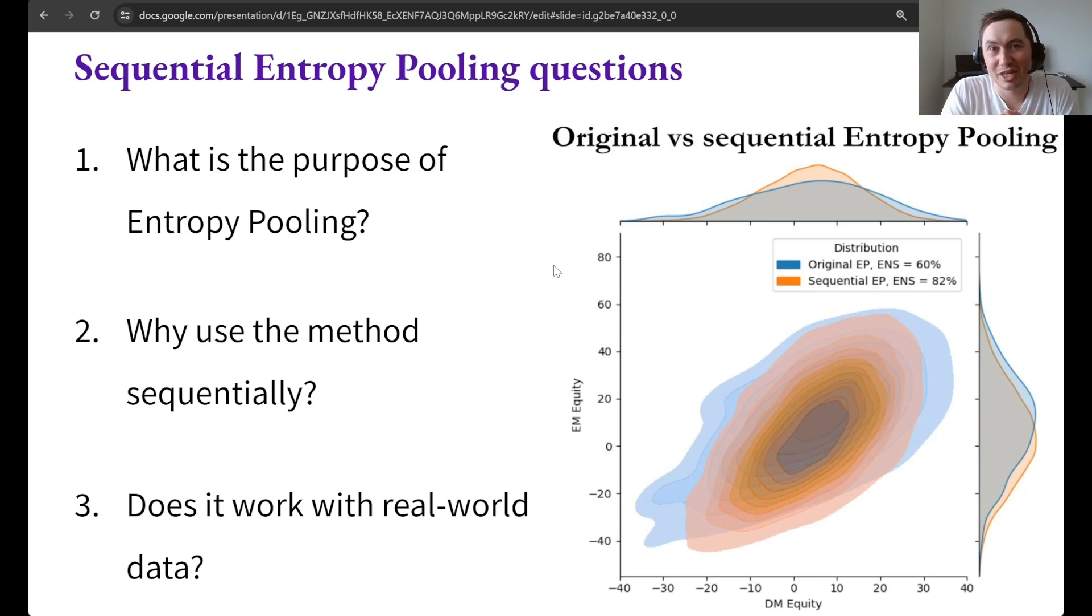Another question I get is why to use the method in a sequential way? The short answer to this question is just that it gives you better results. Basically you can imagine that when we have the entropy pooling objective we are trying to minimize it subject to some linear constraints. If you use it in a clever way sequentially then you are able to get a lower objective value with the same constraints.